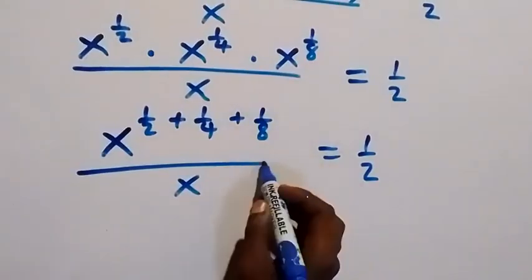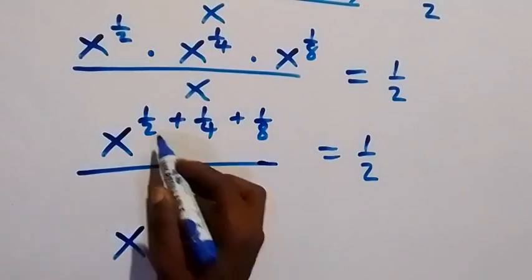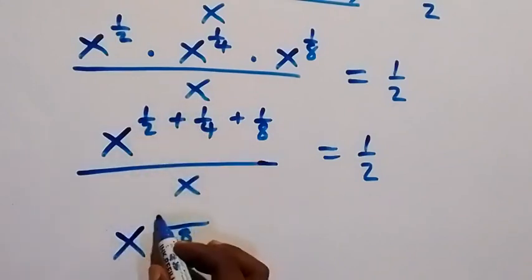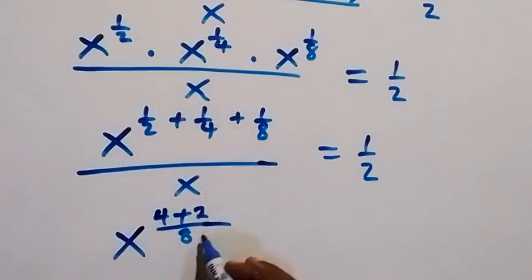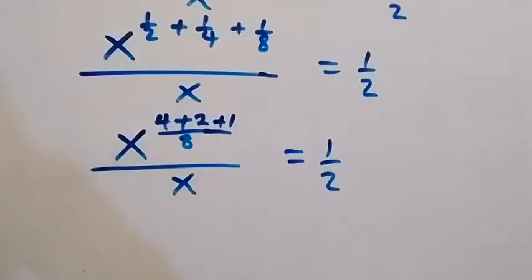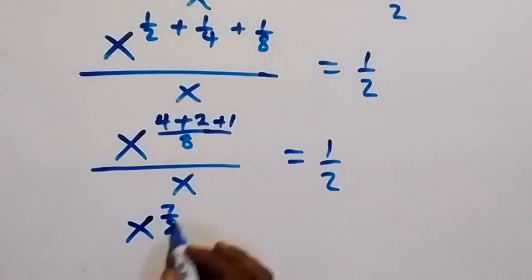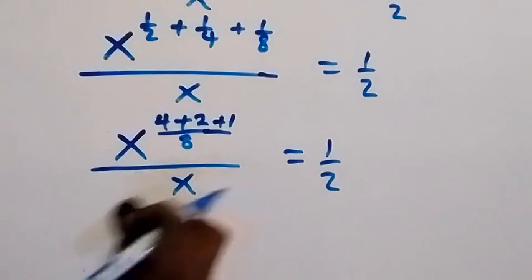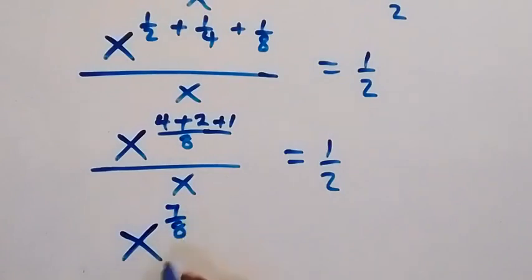Let's bring these fractions together. The LCM is 8, so we have x raised to power — LCM being 8: two goes into eight that's four, four times one is four; plus four goes into eight that's two, two times one is two; plus eight goes into eight is one, one times one is one — then over x equals one over two. So four plus two plus one is seven, giving us x raised to power seven over eight divided by x equals one over two.